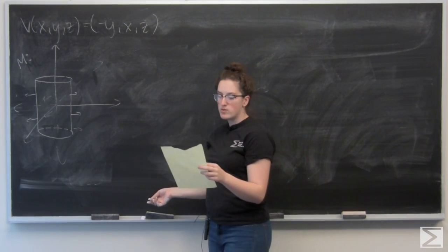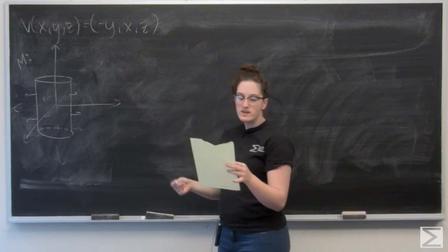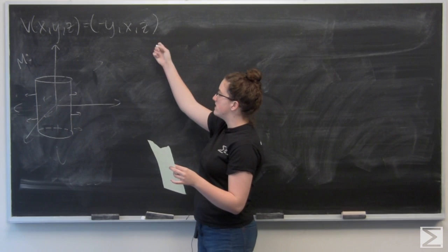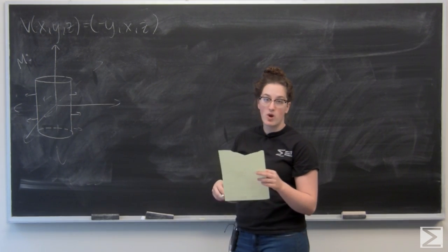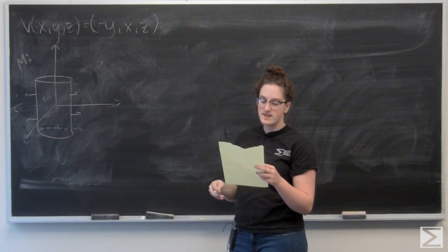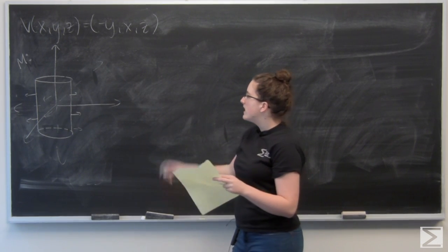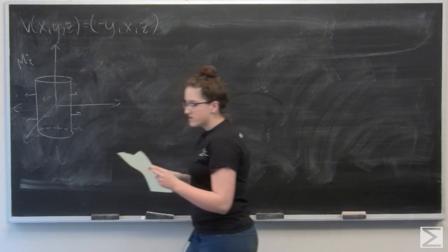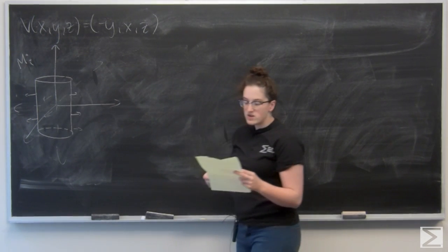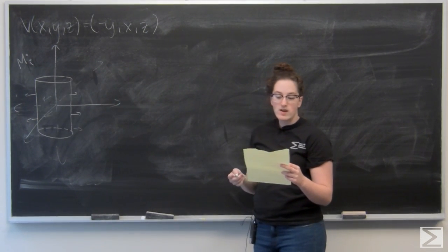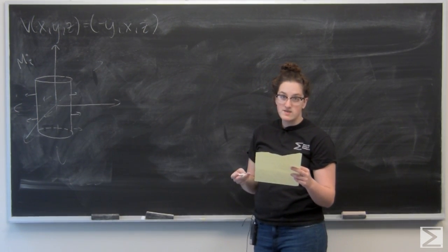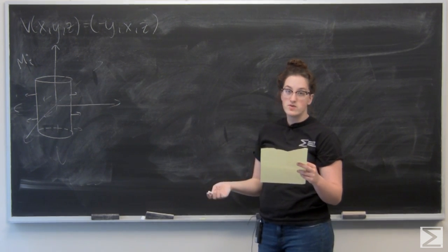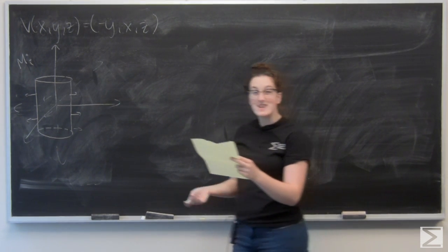This is a multi-part problem. In the beginning I'm given this vector field V of x, y, z, which is negative y, x, z, and that is the circular cylinder centered around the z-axis of radius 5 between z equals negative 7 and z equals 7, oriented outward.